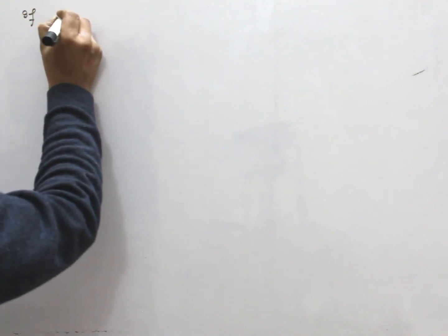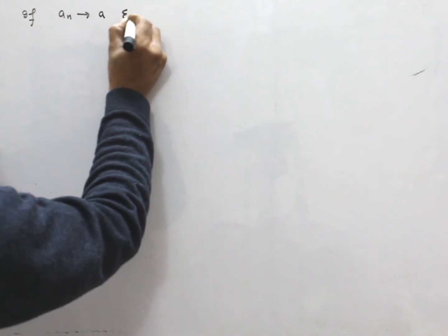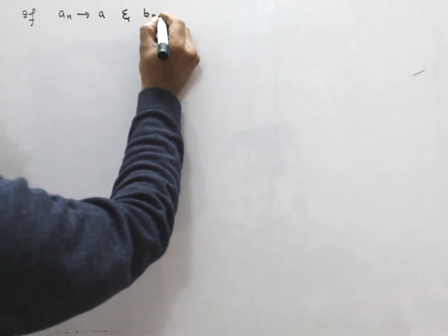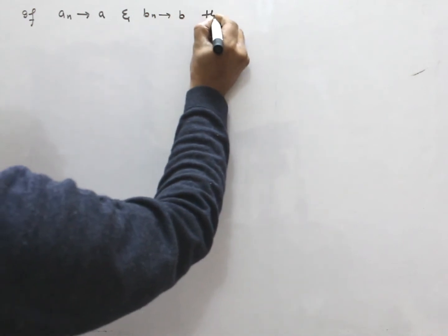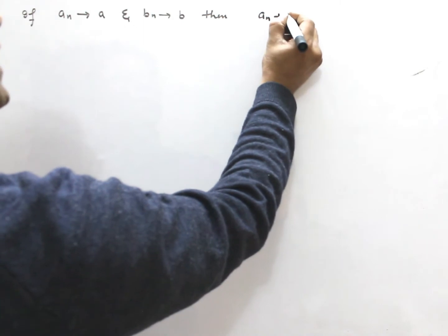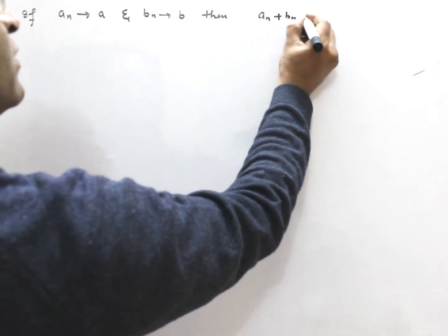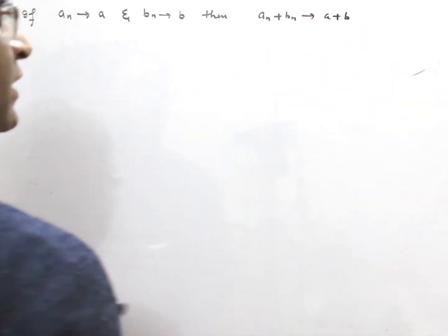If An converge to A and Bn converge to B, then sum of An and Bn will converge to sum of A and B.